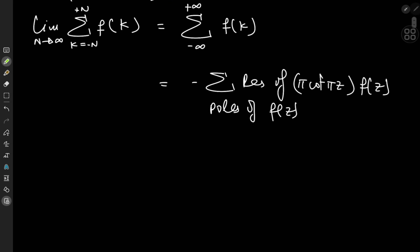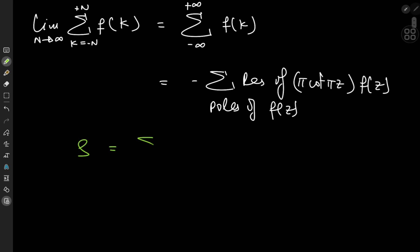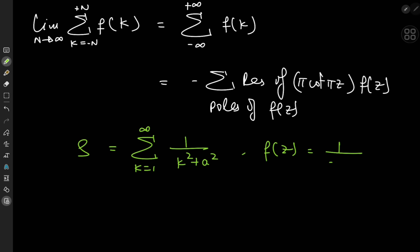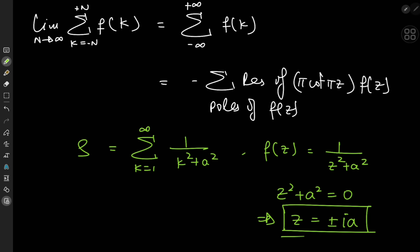We're going to evaluate first this sum, which I'll call S. So S is the sum over the positive integers k of 1/(k² + a²). We define f(z) = 1/(z² + a²). The poles of this function are located where the denominator is zero, meaning z equals plus or minus i·a, and these are simple poles.